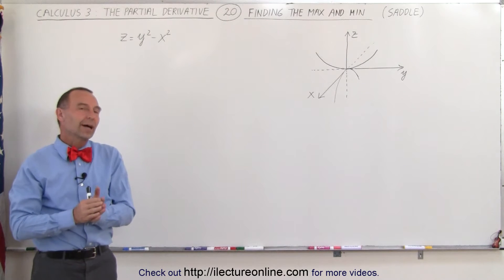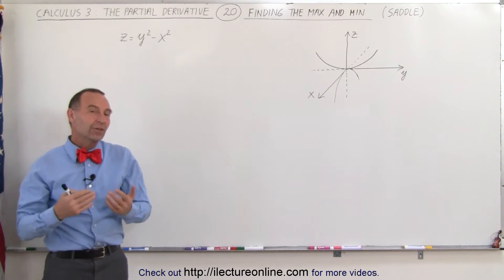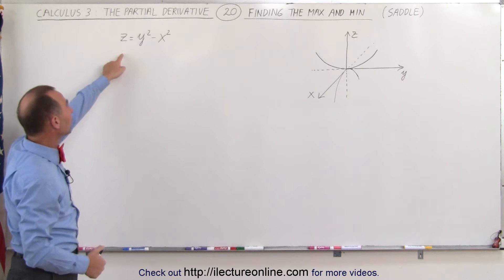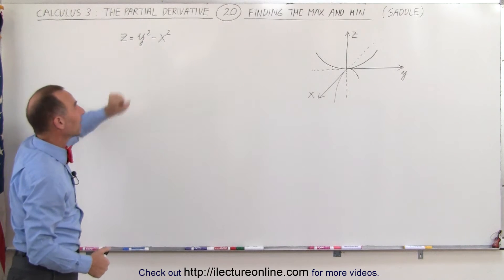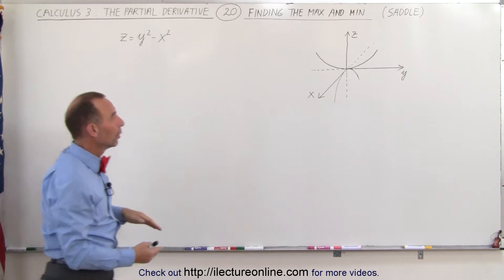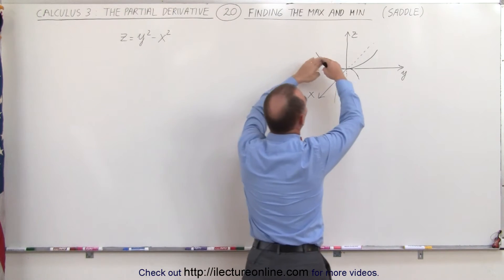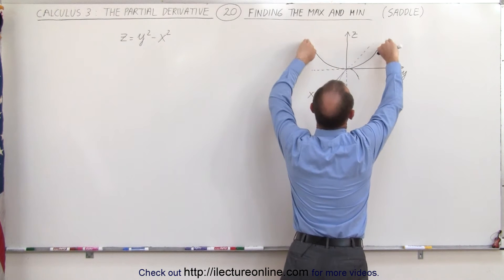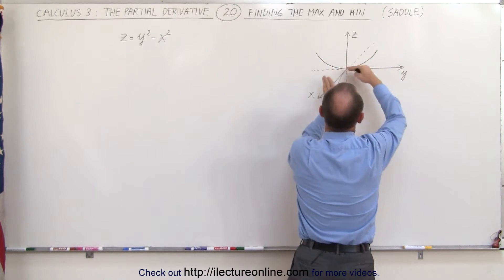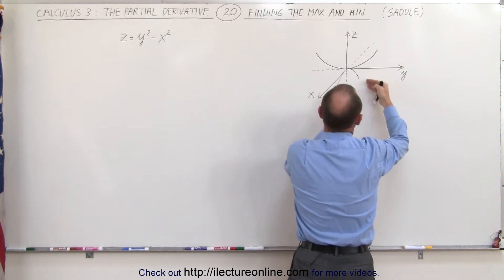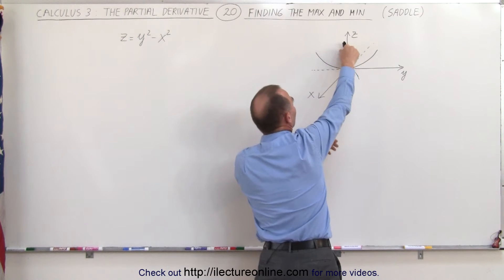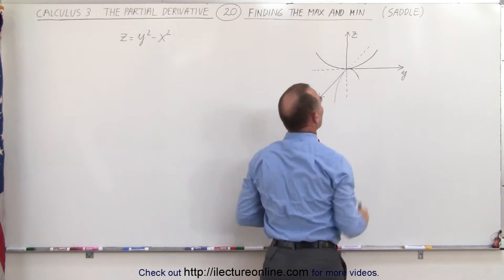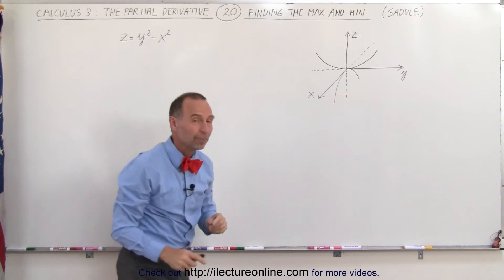Welcome to our lecture online. This equation represents a saddle: z equals y squared minus x squared. In the y direction the function goes up, and in the x direction the function goes down, so it's basically a saddle — a person can actually sit there and straddle across that point.